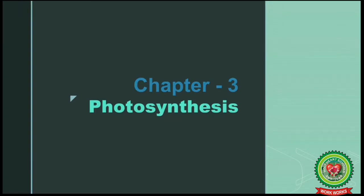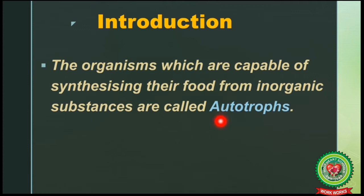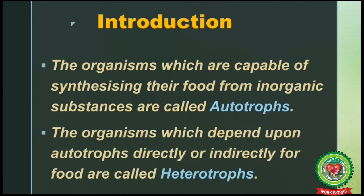Good morning. Today I am going to start with Chapter 3: Photosynthesis. First of all, what are autotrophs? 'Auto' means self. The organisms which are capable of synthesizing their food from inorganic substances like water, carbon dioxide, etc. are called autotrophs. The example for autotrophs are plants. Next, heterotrophs — 'hetero' means different. The organisms which depend upon autotrophs directly or indirectly for food are called heterotrophs, and the example for heterotrophs is animals.